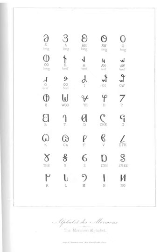Officially, the Deseret Alphabet was created to simplify the spelling of English words for the benefit of children and English as a second language learners. Some of the alphabet's contemporaries, however, posited an alternative motivation for its development: increasing the isolation of the early Mormons.